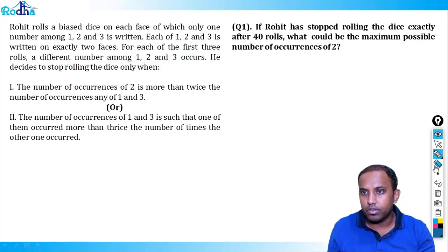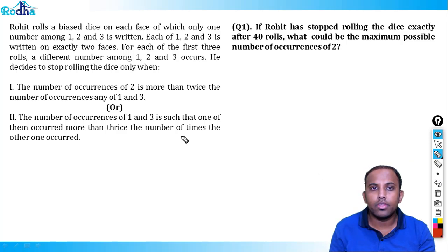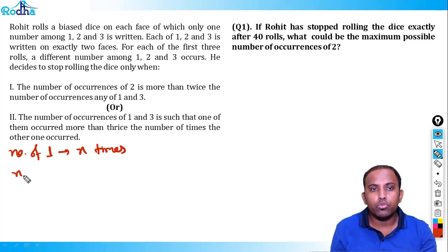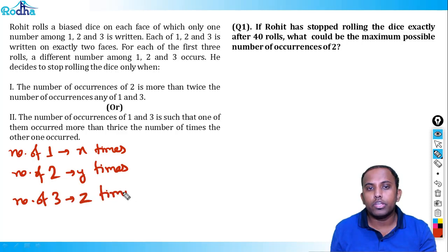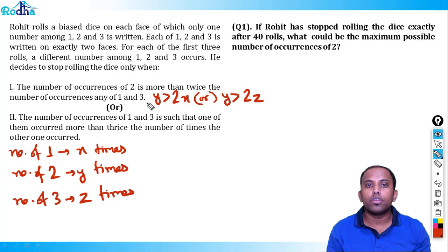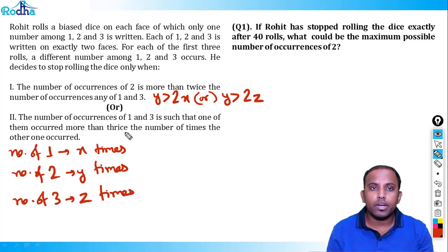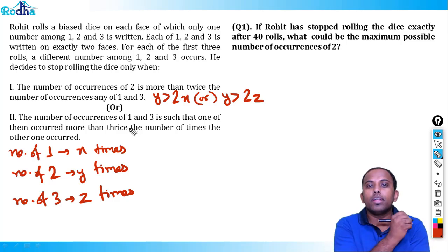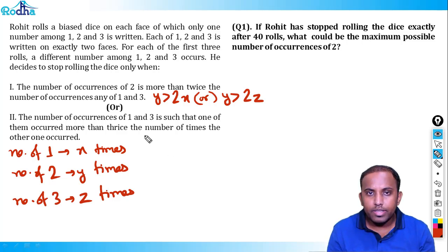Let's write the two stopping conditions. Let x = number of times 1 occurs, y = number of times 2 occurs, z = number of times 3 occurs. The first condition: y > 2x OR y > 2z — the dice will stop. The second condition: the occurrences of 1 and 3 are such that one occurred more than thrice the other, meaning x > 3z OR z > 3x.